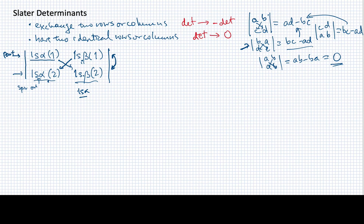When I multiply all this out, I'm going to end up with 1s alpha 1 times 1s beta 2 minus 1s beta 1, 1s alpha 2. And this is an anti-symmetric wave function, as advertised, to exchange of the two particles.